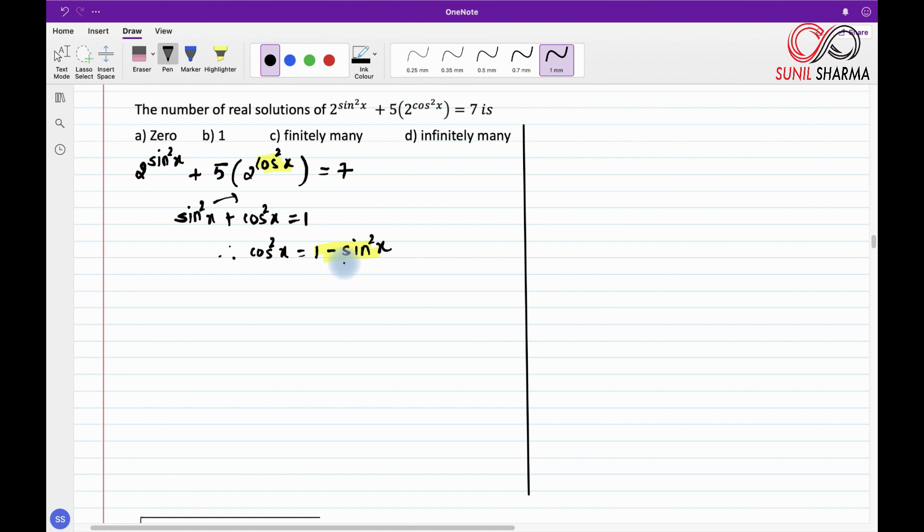So this here is the value of cos²x which we will substitute here. So let me very quickly write down: 2^(sin²x) + 5 times 2^(1 - sin²x) = 7.